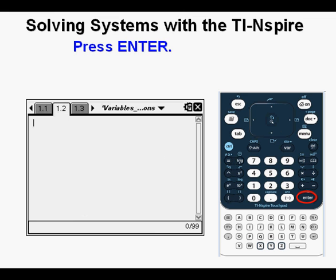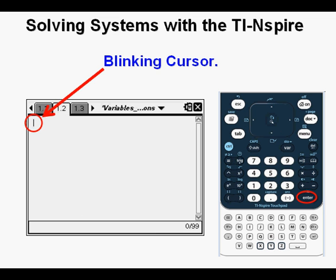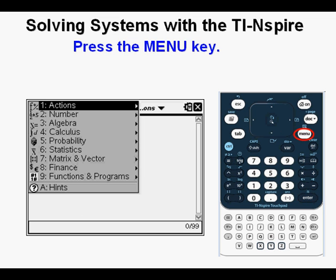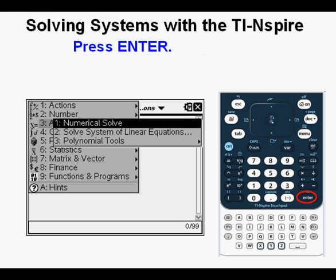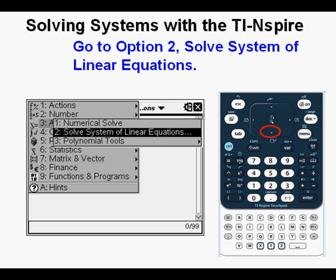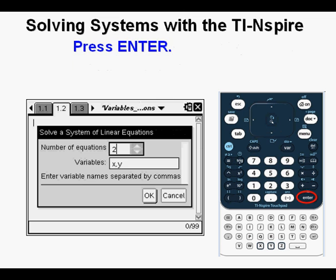We see the cursor blinking at the top left. Next, press the Menu key. Go to Option 3, Algebra. Alternatively, you could just press the number 3. Press Enter. Go down to Option 2, Solve System of Linear Equations. Press Enter.